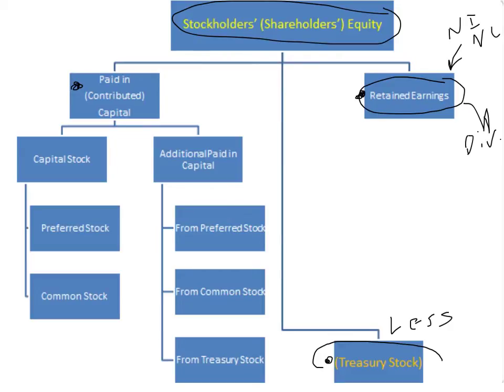If we take a look at the paid in side of equity, it separates into two big parts. The first one is capital stock and the second one is additional paid in capital. There are two major parts of capital stock: preferred and common. Preferred is usually listed first, and you can have additional paid in capital from preferred, from common, and from treasury stock.